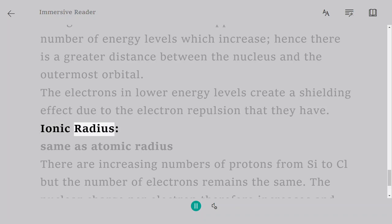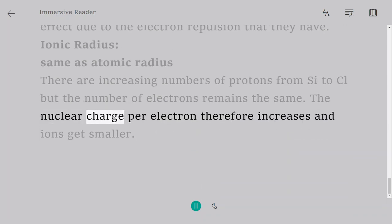Ionic Radius: Same as Atomic Radius. There are increasing numbers of protons from C to Cl, but the number of electrons remains the same. The nuclear charge per electron therefore increases and ions get smaller.